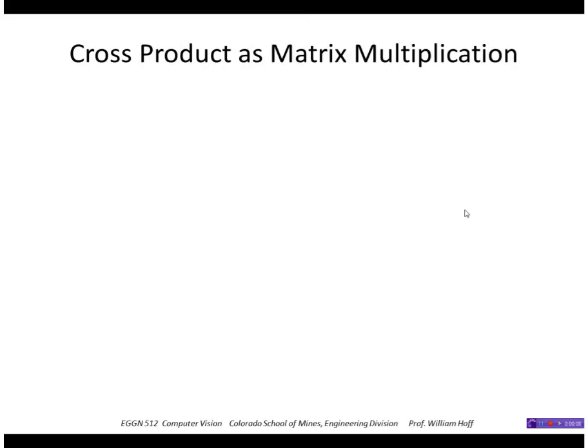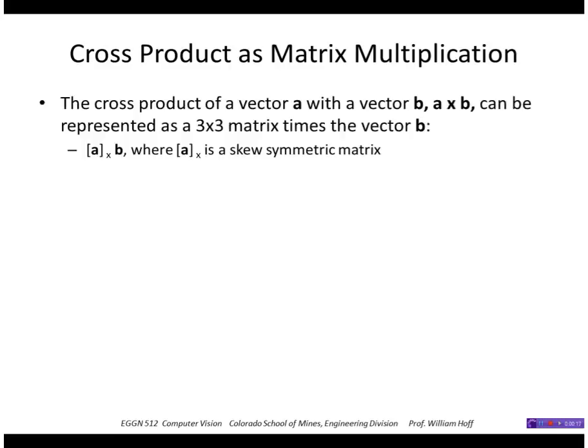So let's look at how to represent a cross product as a matrix multiplication so that we can get those equations in the form of matrix products. So the cross product of a vector A with a vector B, if these are three dimensional vectors, can be represented as a 3 by 3 matrix times the vector B.